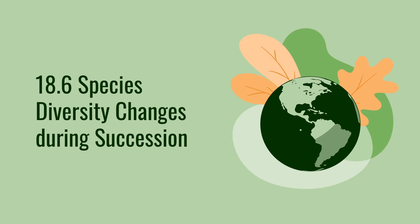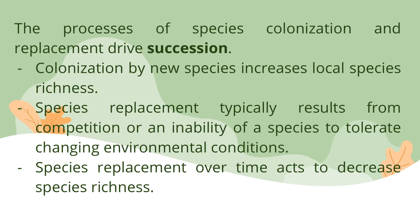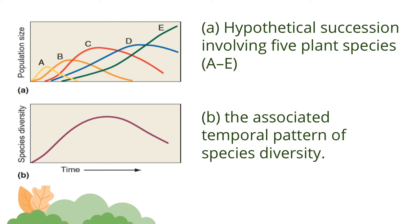Section 18.6: Species diversity changes during succession. The process of species colonization and replacement drives succession. Colonization by new species increases local species richness. Species replacement typically results from competition or an inability of a species to tolerate changing environmental conditions, and species replacement over time acts to decrease species richness.